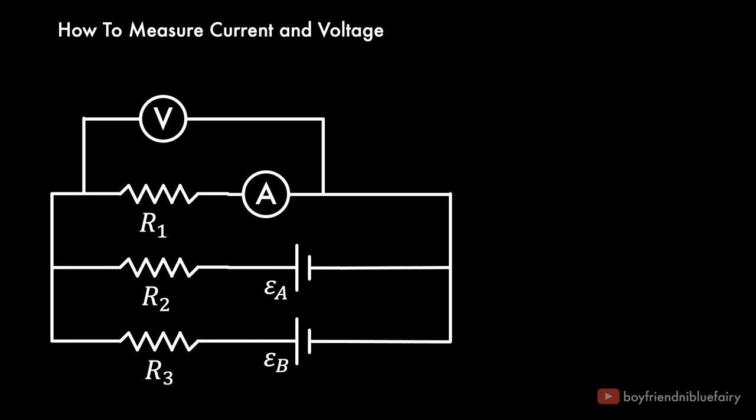To simultaneously measure voltage and current, just remember that a voltmeter is connected in parallel with the target component, while an ammeter is connected in series with the target circuit or component.